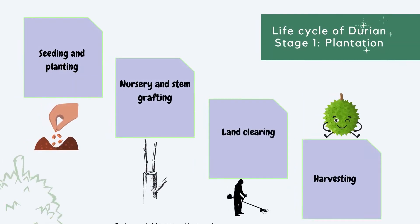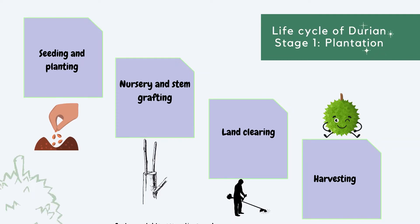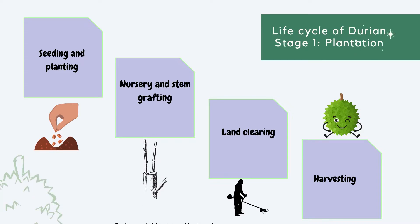The first stage is plantation. This stage focuses on growing, taking care of, and harvesting durian. This includes seeding and planting, nursery and stem grafting, land clearing, and harvesting.